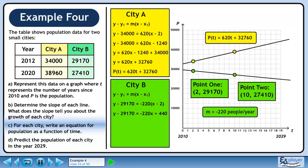Multiply minus 220 through the brackets on the right side. Bring minus 29,170 across the equals and change its sign. Simplify the equation.